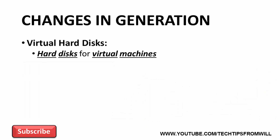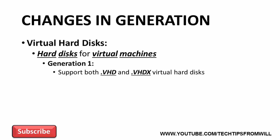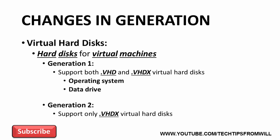On Windows Server 2012 and Windows Server 2012 R2 Hyper-V servers, Generation 1 virtual machines support both VHD and VHDX virtual hard disks as both an operating system and a data drive. Generation 2 virtual machines, on the other hand, support only the newer VHDX virtual hard disks. You can't attach a VHD virtual hard disk to a Generation 2 virtual machine.